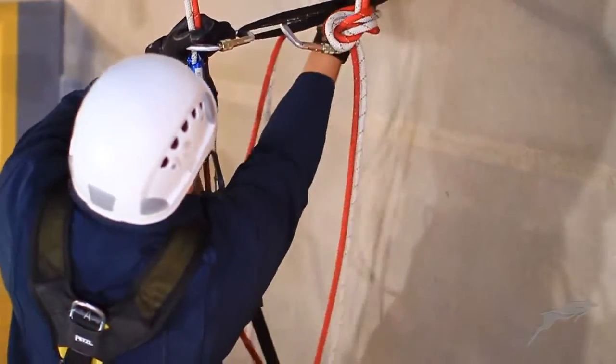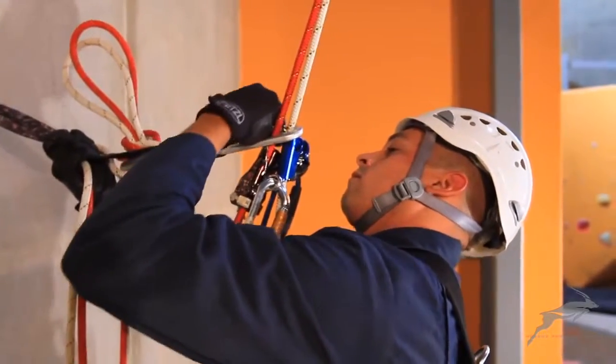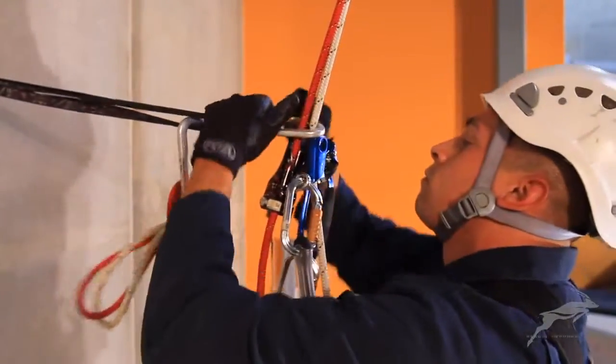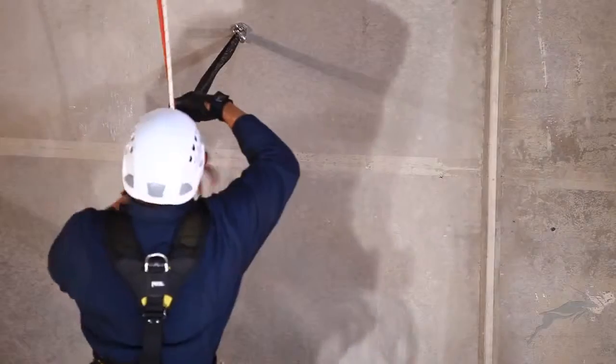Pull yourself into the deviation anchor point enough to remove the original deviation carabiner and gently lower out using the trailing ropes below.